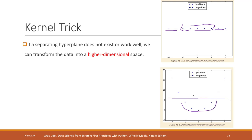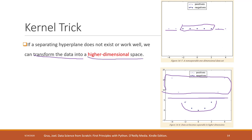This is one type of data, and this is another type of data. Converting the training data from a lower dimension into a higher dimensional space is called the kernel trick.